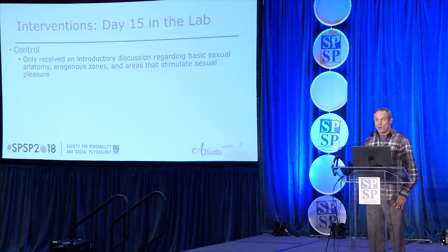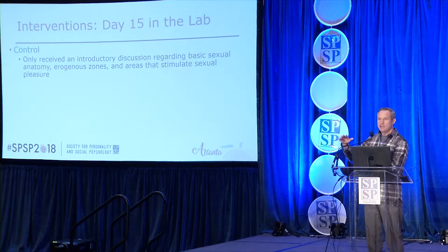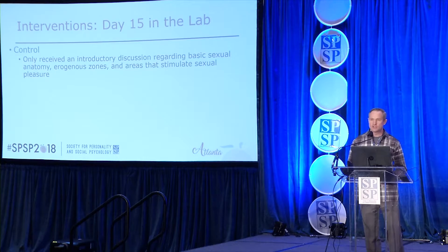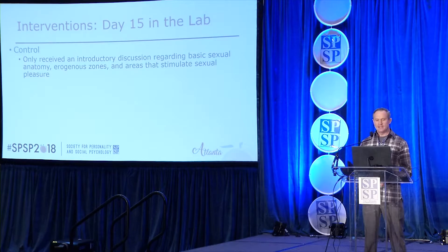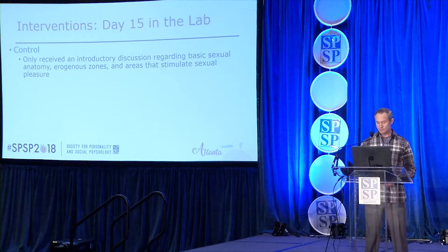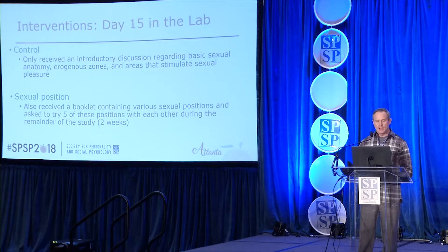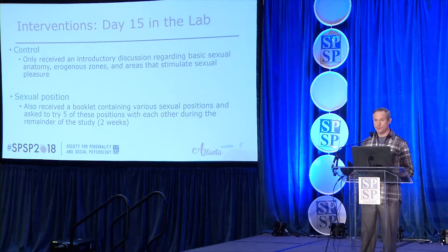What did the interventions look like? The intervention itself was run by a research assistant in the lab walking couples through it, but the actual intervention was pre-taped for consistency. It took roughly half an hour; the in-lab session took roughly an hour and a half. They received an introductory discussion regarding basic sexual anatomy, erogenous zones, and areas that stimulate sexual pleasure. In the sexual positions condition, they also received a booklet—the playbook—containing ten various sexual positions, and were asked to try five of these positions during the remaining two weeks. We prescribed that behavior.